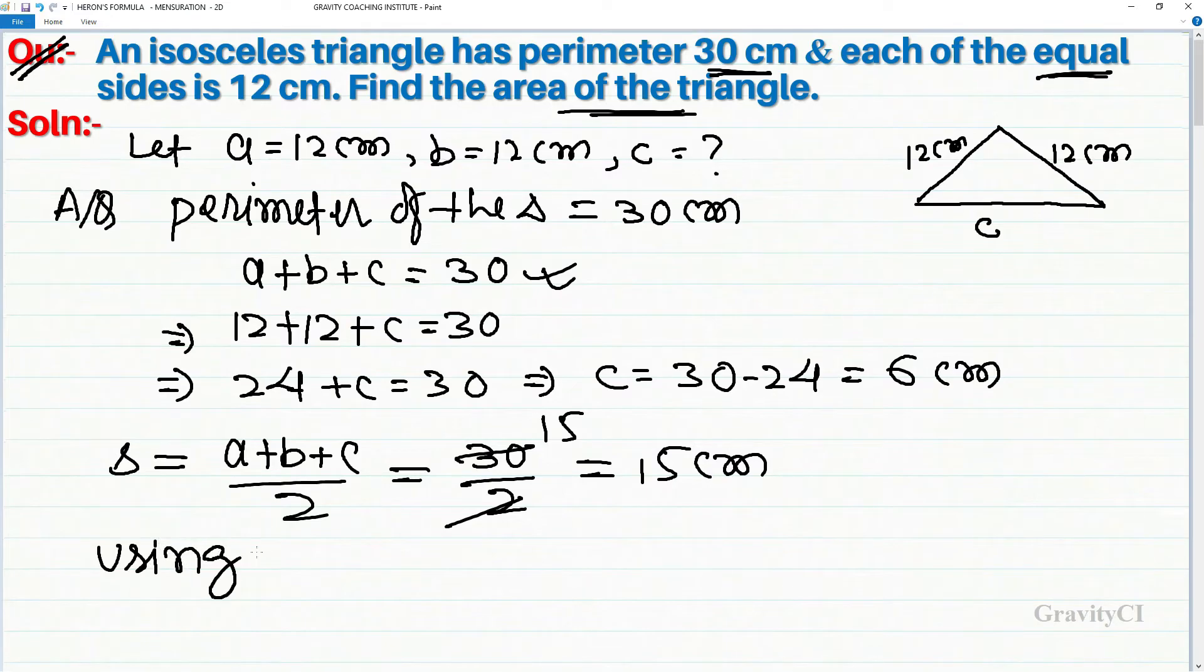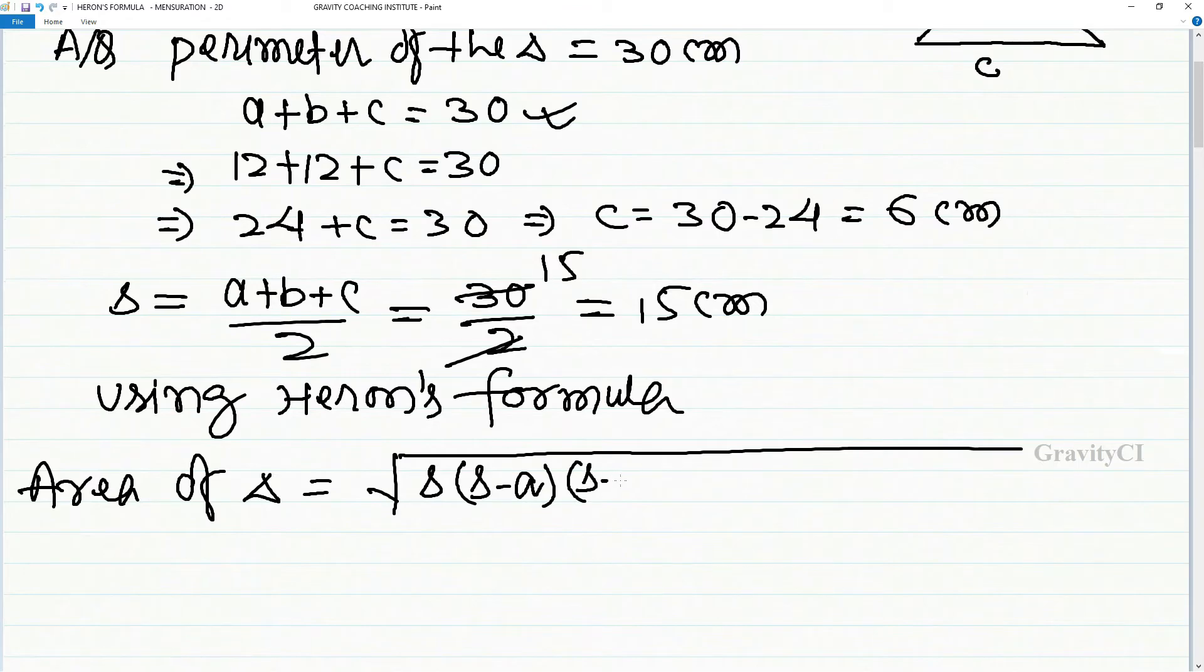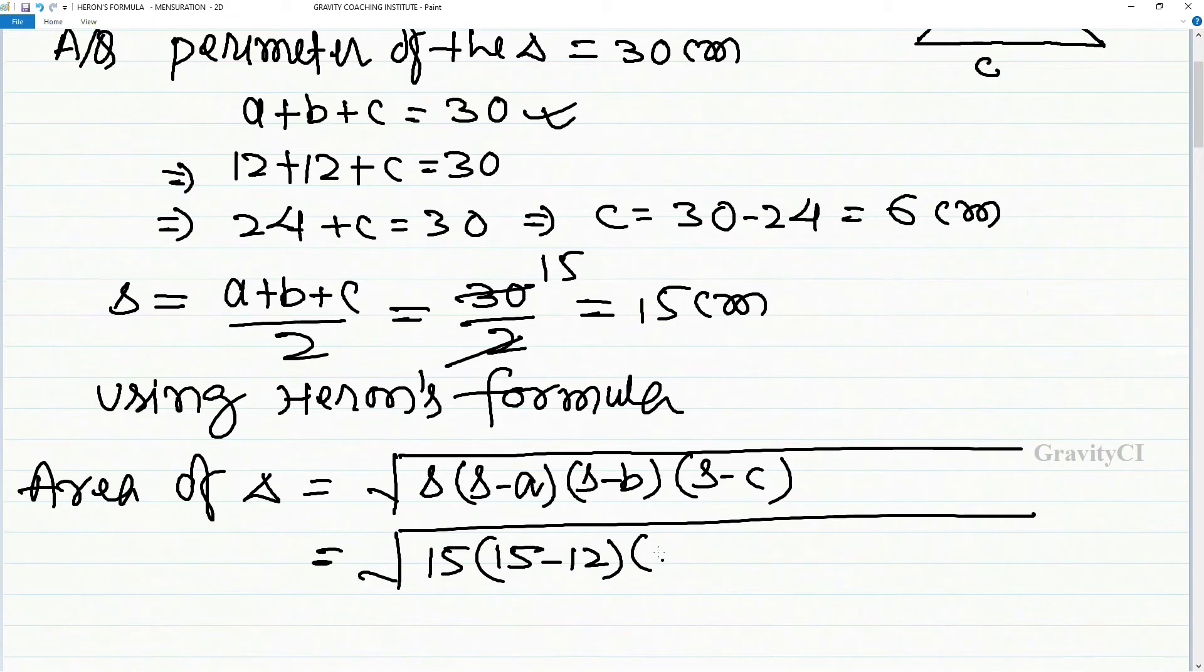15 centimeter. Now applying Heron's formula, area of triangle equal to under root S times S minus a times S minus b times S minus c. So equal to under root 15 times 15 minus 12 times 15 minus 12 times 15 minus 6.